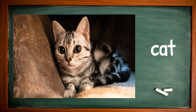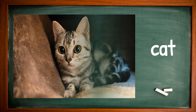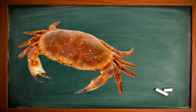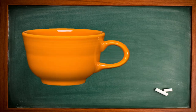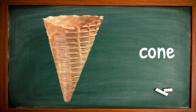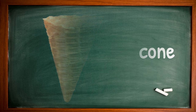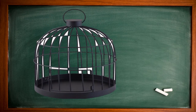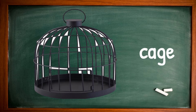The first picture is cat. Very good. The next one is a crab. It is a cup. Yes, it's a cone. Good job. It is a cage.